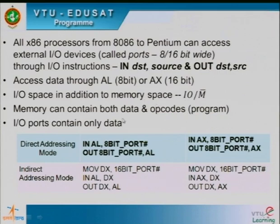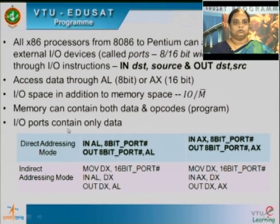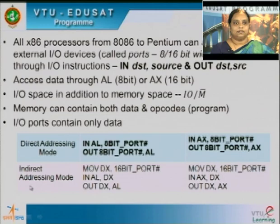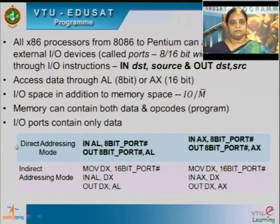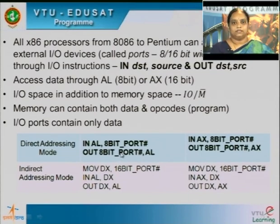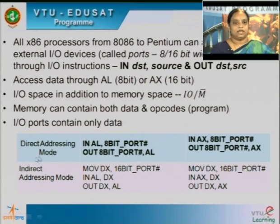What is the difference between memory space and I/O space? Memory can contain both data and opcodes — your opcodes are your program — whereas I/O ports contain only data. The addressing of IN and OUT instructions is through two addressing modes: direct addressing mode and indirect addressing mode. In direct addressing mode, an 8-bit port address is given directly. The port address can be 8 bits or 16 bits; if the address is 8 bits, we can use direct addressing mode.